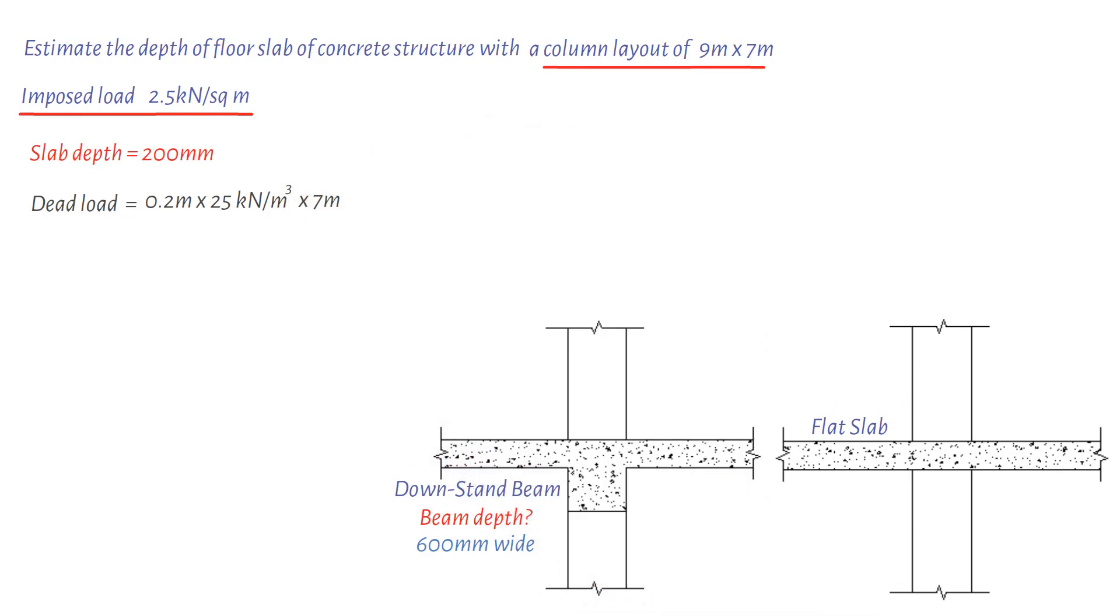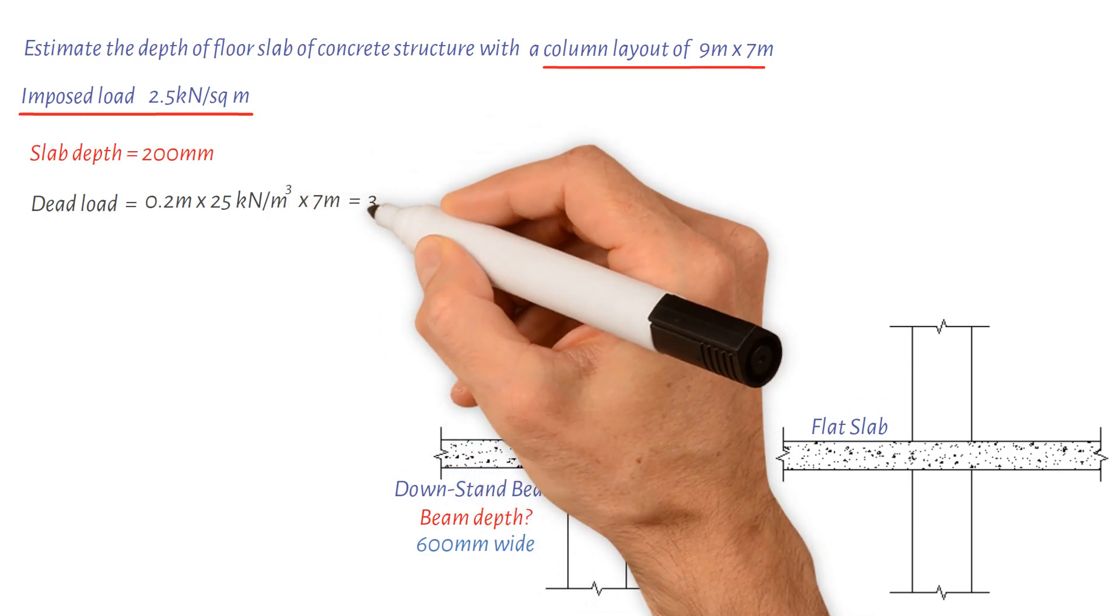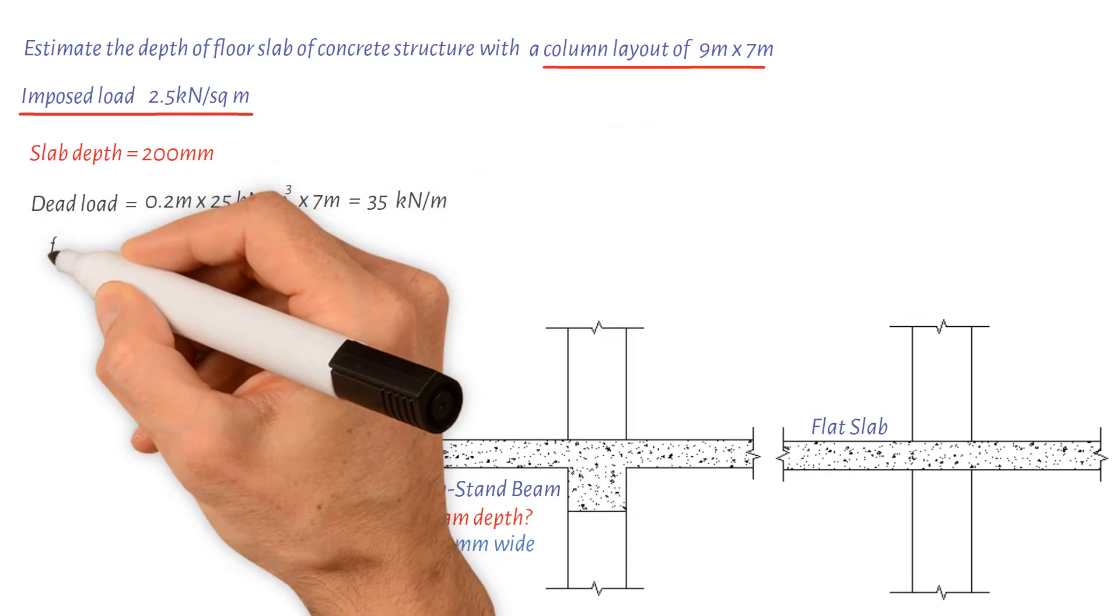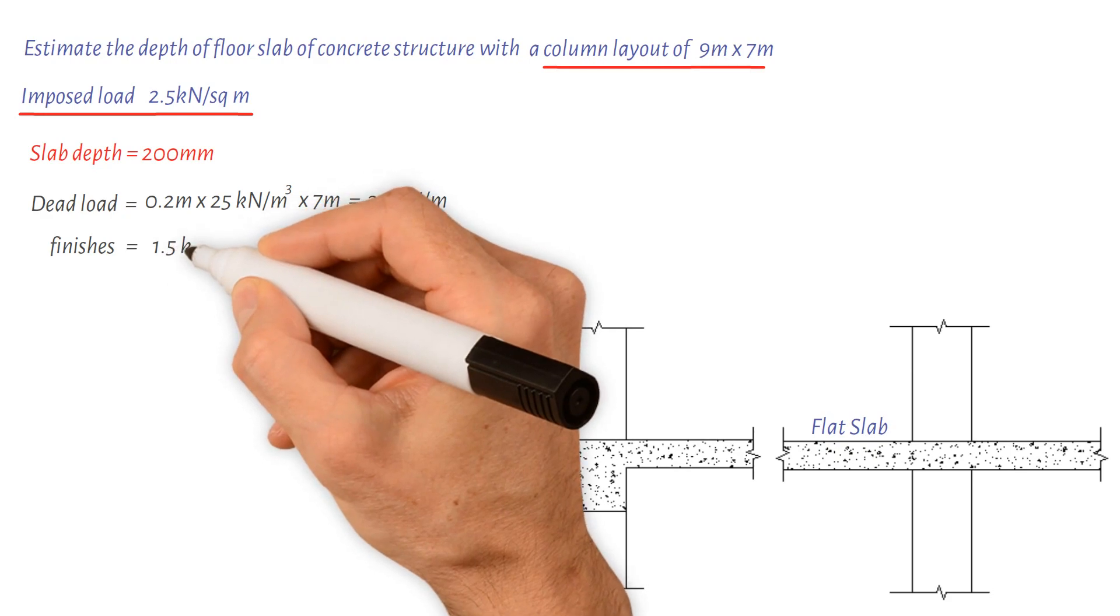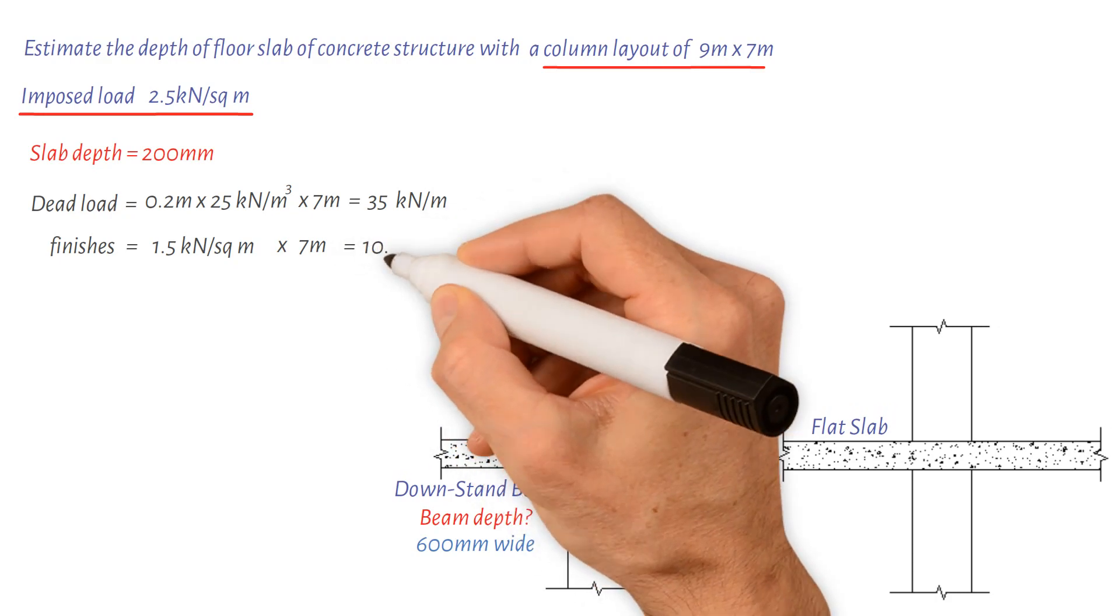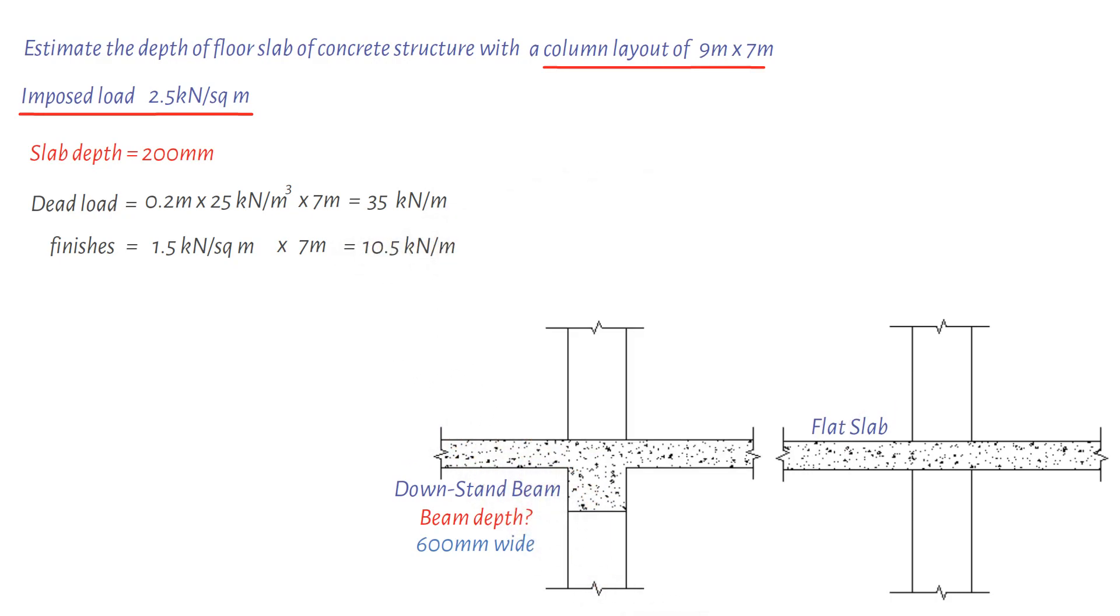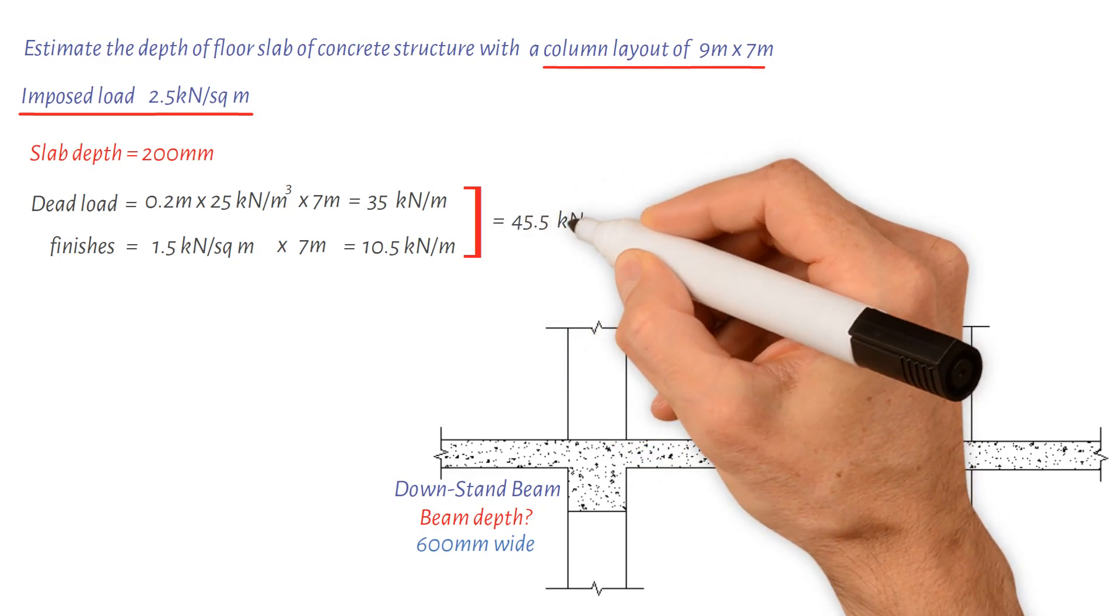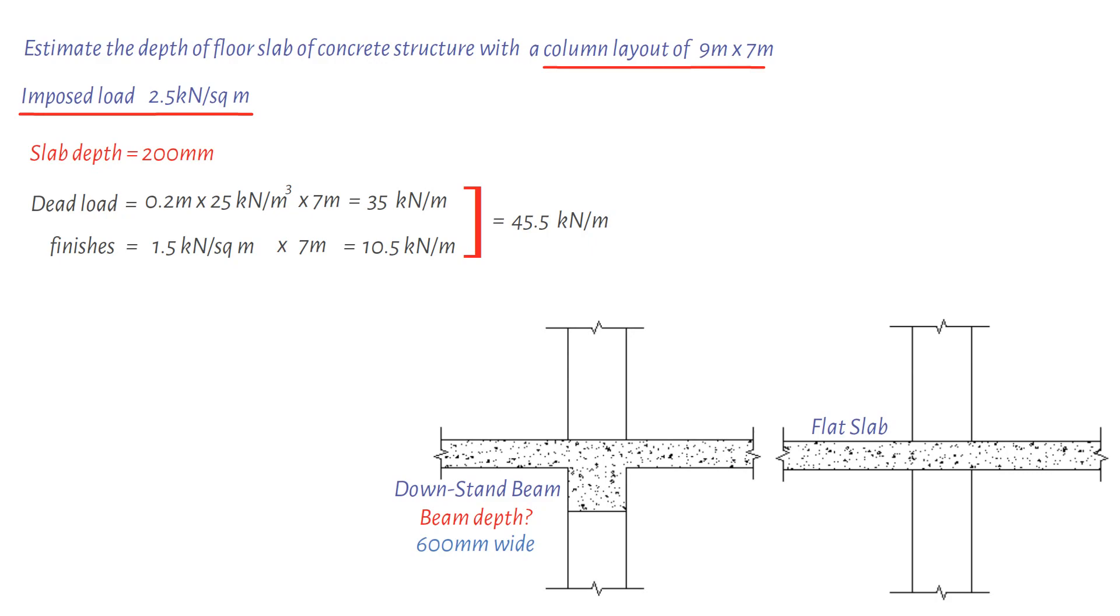We also allow finishes: 1.5 kilonewtons per square meter, so 1.5 times 7 meters. This gives us a value of 10.5 kilonewtons per meter. As a result, we have total dead load of 35 plus 10.5, which is equal to 45.5 kilonewtons per meter. Imposed load: 2.5 kilonewtons per square meter times 7 meters, giving us a value of 17.5 kilonewtons per meter.